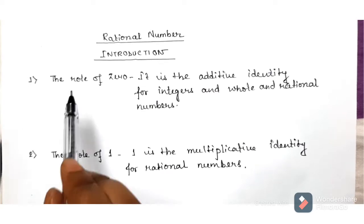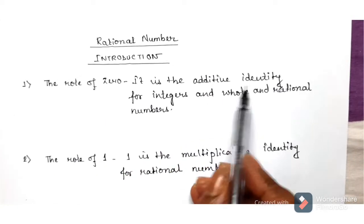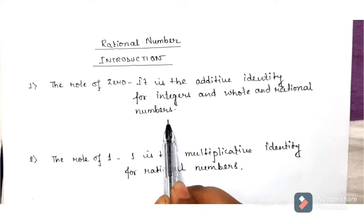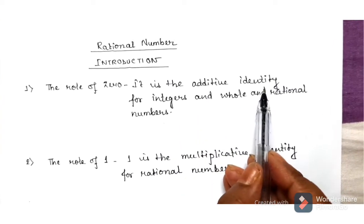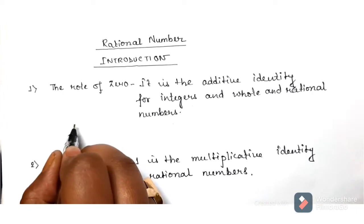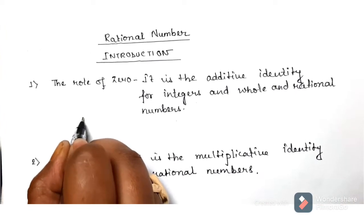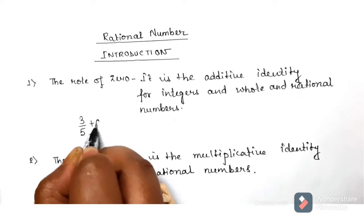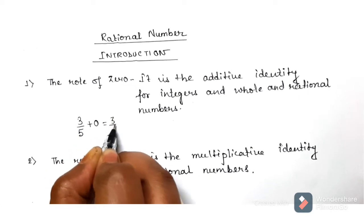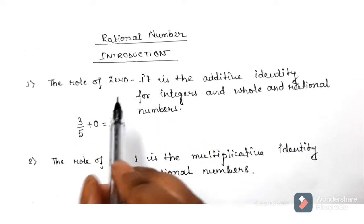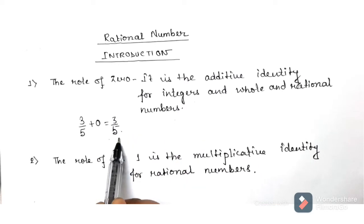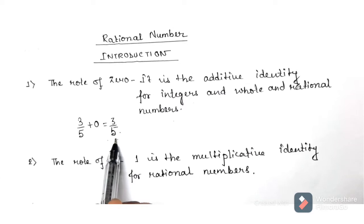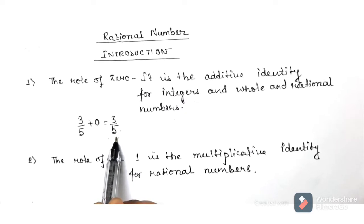The role of 0: it is the additive identity of our integers, whole numbers, and rational numbers. What do you mean by additive identity? If I take any rational number, say 3 by 5, and if I add 0 to this, we get the same number. That is why this is called additive identity — because after adding, we are getting the identity, meaning the same number.